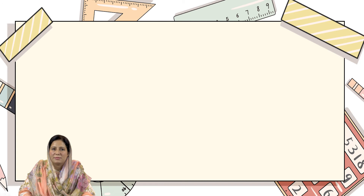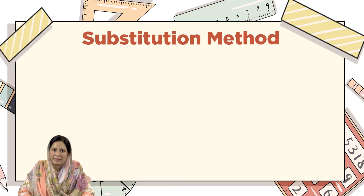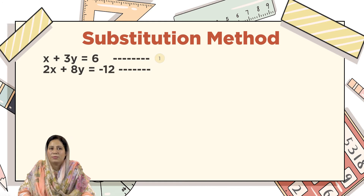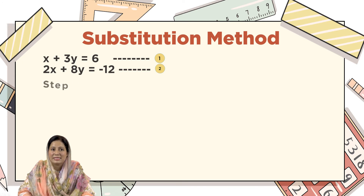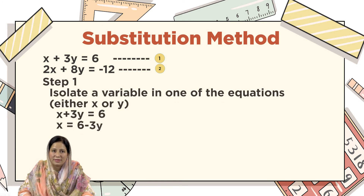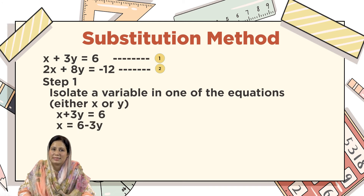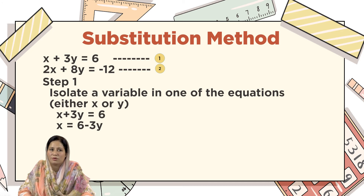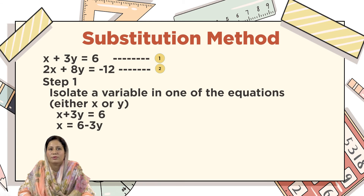The second method of solving simultaneous linear equations is the substitution method. Here we have an example. Equation 1 is x plus 3y equals 6, and equation 2 is 2x plus 8y equals minus 12. Step 1: we will isolate a variable in one of the equations — either x or y. I am isolating x here because it has no coefficient. So we keep x on one side and shift the rest to the other side, giving us x equals 6 minus 3y.